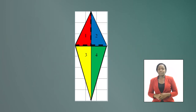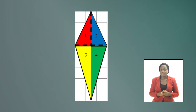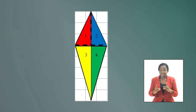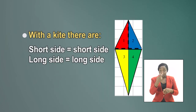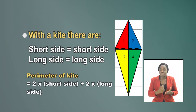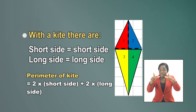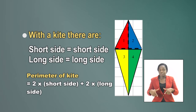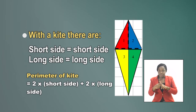And so we can deduce that the perimeter, which is the outline or outer border of the kite, is the distance all around the kite. So we just add the four sides together. The two short sides are equal and the two long sides are equal. We can therefore write a formula: the perimeter of a kite equals two times the short sides plus two times the long sides. That's the formula.